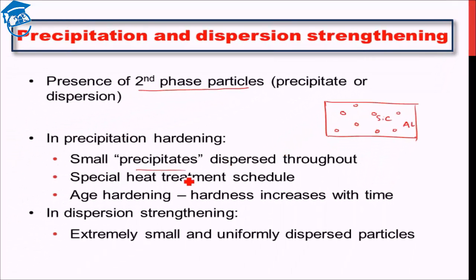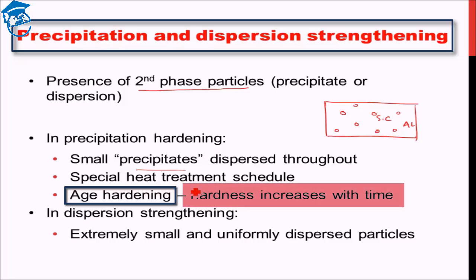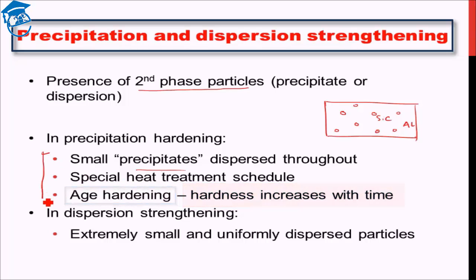This special heat treatment process leads to the formation of fine precipitates in the bulk. Age hardening is an alternative term used for precipitation hardening, meaning that the hardness and strength of the material increases with time. We will revisit this whole concept in the next lecture.